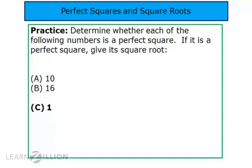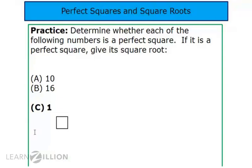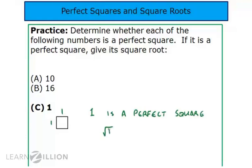What about one? Is one a perfect square? You bet it is, because I could take a unit square and form it into a square — in fact, it already is. It is a one-by-one square. Therefore, one is a perfect square and its square root is one.